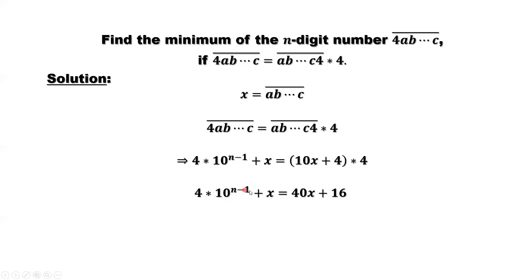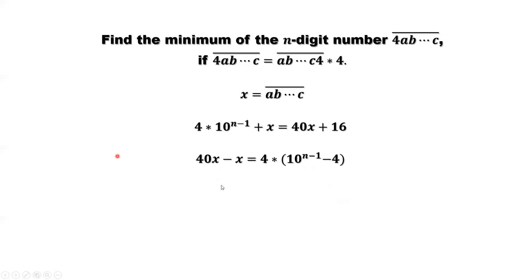Simplify. 4 × 10^(n-1) + X equals 10X + 4, which gives us 40X + 16. Continue to simplify. Move X to one side: 40X - X. Move the constant to the other side: 4 × 10^(n-1) - 16. The common factor is 4, so we get 4(10^(n-1) - 4).